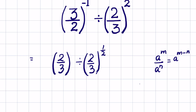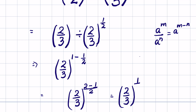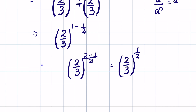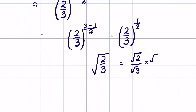If we consider 2 upon 3 as the base, we can write it as 2 upon 3 raised to the power of 1 minus 1 upon 2, which equals 2 upon 3 raised to the power of 1 upon 2. And 1 upon 2 in the power means it is under square root — so this is the square root of 2 upon 3. To rationalize this so that we have a real number, we multiply and divide by the square root of 3, giving us square root of 6 upon 3. This is our answer.